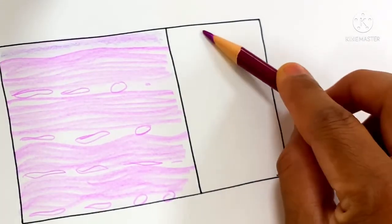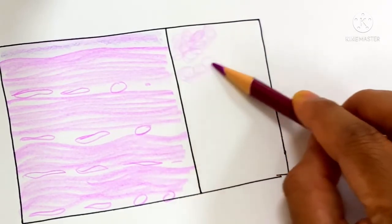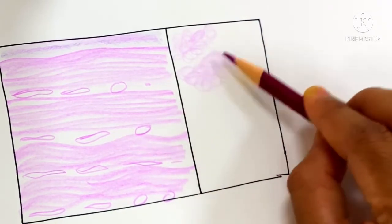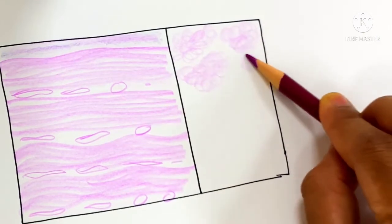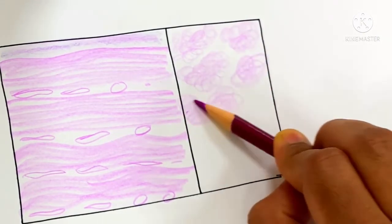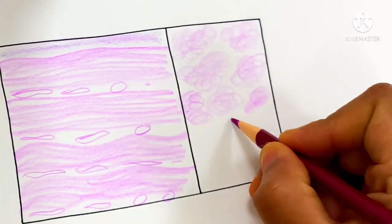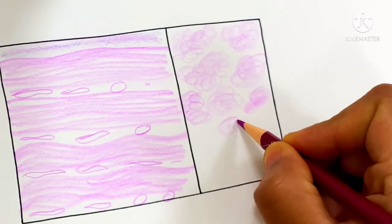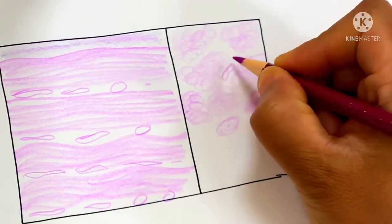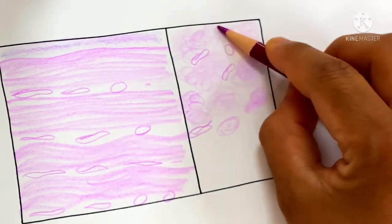The tendon is covered by epitendinum fibrous connective tissue, and in between the bundle of fibers there is vascular connective tissue known as endotendinum. The collagen fibers are arranged regularly and parallel to the direction of stress in tendon and aponeurosis.